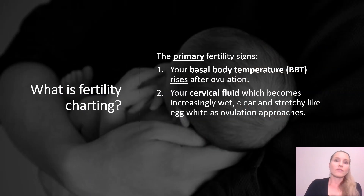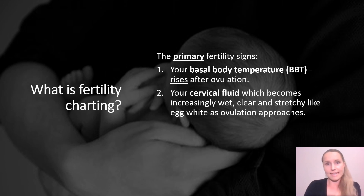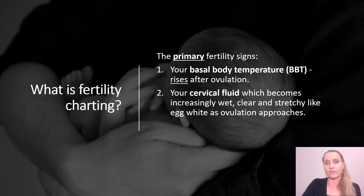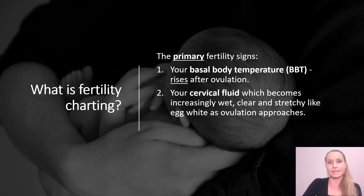Fertility charting involves observing and recording your body's natural fertility signs so that you can see your daily fertility status and identify your fertile window. Charting your fertility is highly effective because your body provides really cool clues — fertility signs — that tell you about your fertility status throughout your cycle.